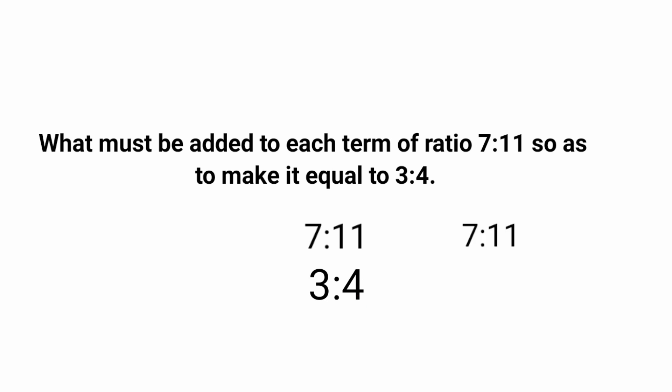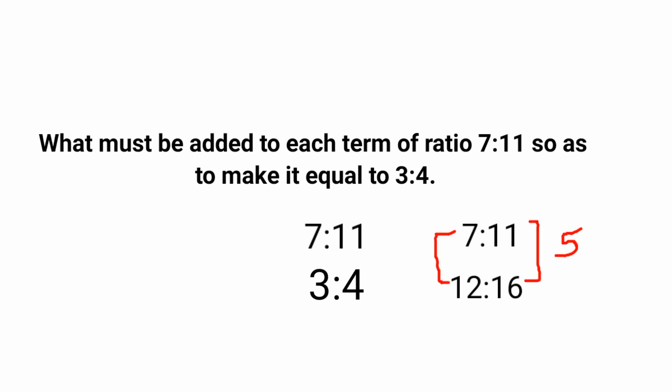Now multiply the second ratio 3:4 by the difference of the first ratio, which is 11 minus 7 equals 4. So multiplying 3:4 by 4 gives 12:16. Now the differences are equal: 12 minus 7 is 5 and 16 minus 11 is 5. So the term which must be added to ratio 7:11 to make it 3:4 is 5.